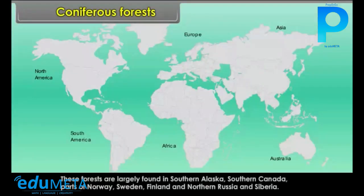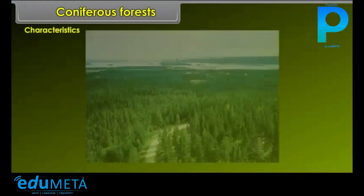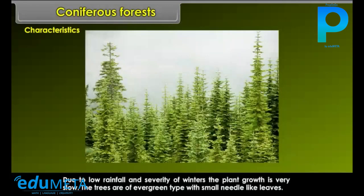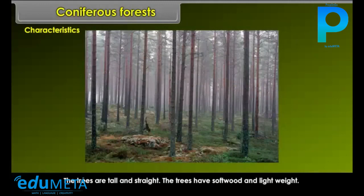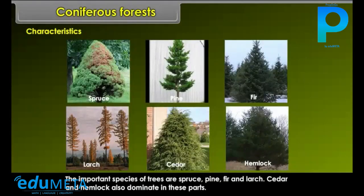Coniferous Forests are largely found in southern Alaska, southern Canada, parts of Norway, Sweden, Finland and northern Russia and Siberia. The winters are very cold and severe and summers are warm and of short duration. This climate largely controls the growth of plant life. Due to low rainfall and severity of winters, the plant growth is very slow. The trees are of evergreen type with small needle-like leaves, tall and straight, with soft wood and light weight. This wood has great demand in paper making, newsprint, matches and furniture. The important species of trees are spruce, pine, fir and larch. Cedar and hemlock also dominate in these forests.